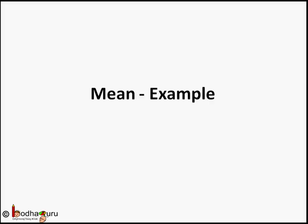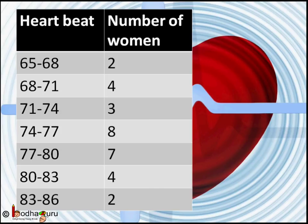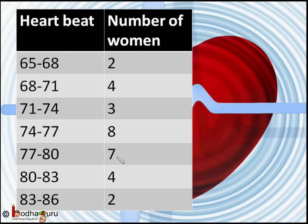Hello friends. Mean is heavily used to find central tendency. Let us take an example. Say 30 women were examined in a hospital by a doctor and the number of heartbeats per minute were recorded. The result is given here in the table. We need to find the mean heartbeats per minute for these women.